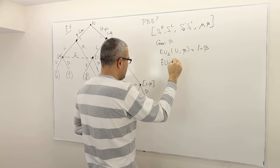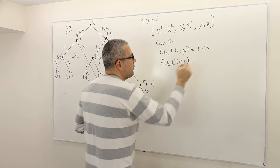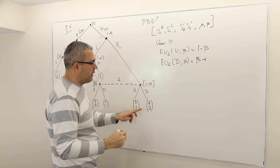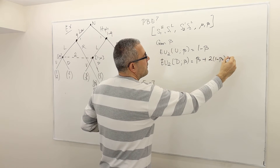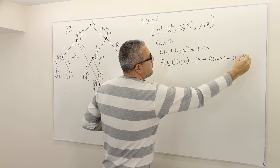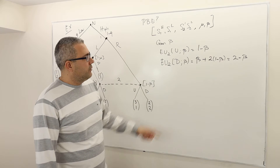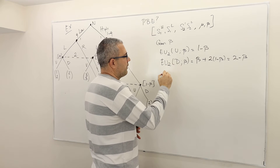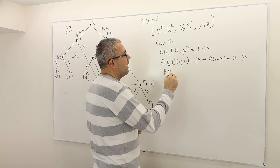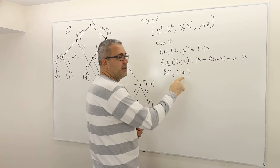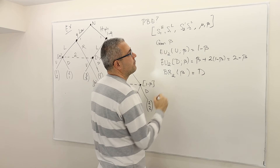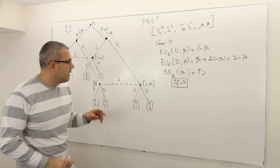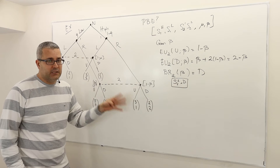And the expected payoff of player two if she plays D instead, given her belief beta, is one times beta plus two times one minus beta, which equals two minus beta. So whatever beta is, two minus beta is always greater than one minus beta. Therefore the best response for player two given belief beta is D. So S22 has to be equal to D — meaning player two should be playing D here.